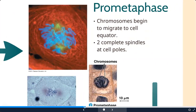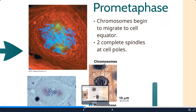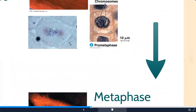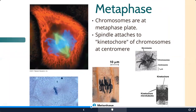Some textbooks split prophase into prophase and pro-metaphase. In pro-metaphase, chromosomes begin migrating toward the center (equator) of the cell. The spindle fibers attach to the centromeres and push and guide chromosomes into the proper position. By the end of pro-metaphase the chromosomes are much more linear and organized.